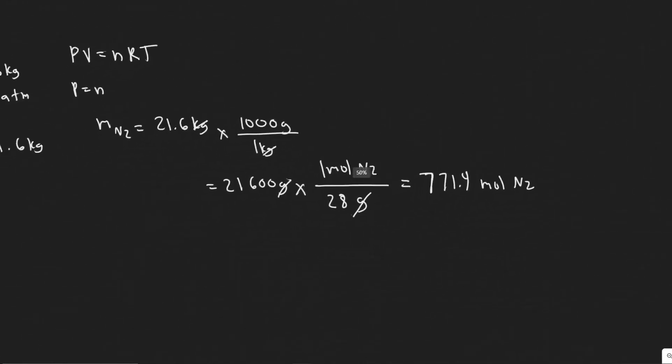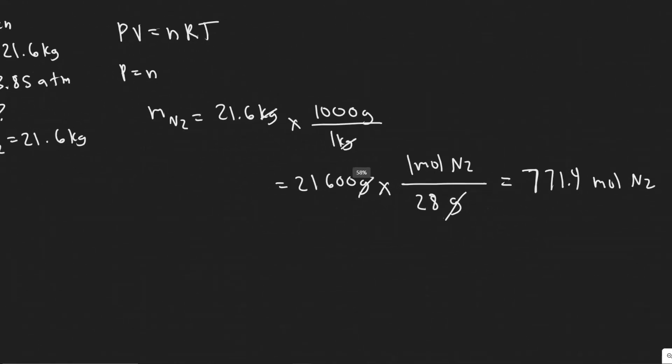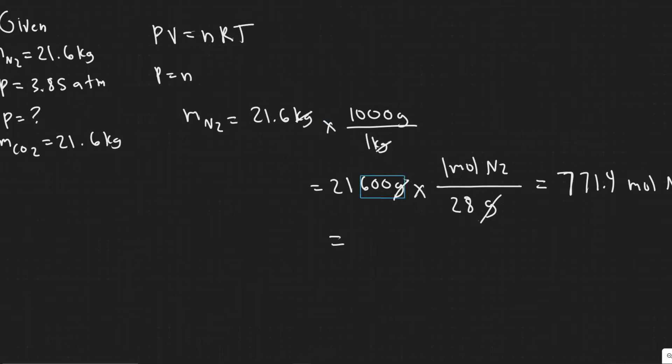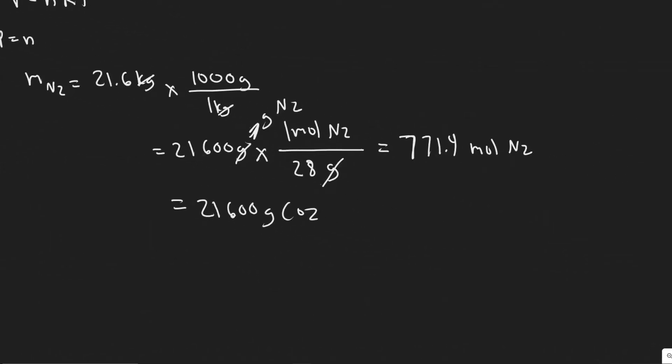So now we have the number of moles of N2, we need to do the same thing with CO2. So once again, we have 21.6 kg. Once again, that's 21,600 grams. And so keep in mind, this is of CO2. This was grams of N2. And so this would be N2, you could write there too.